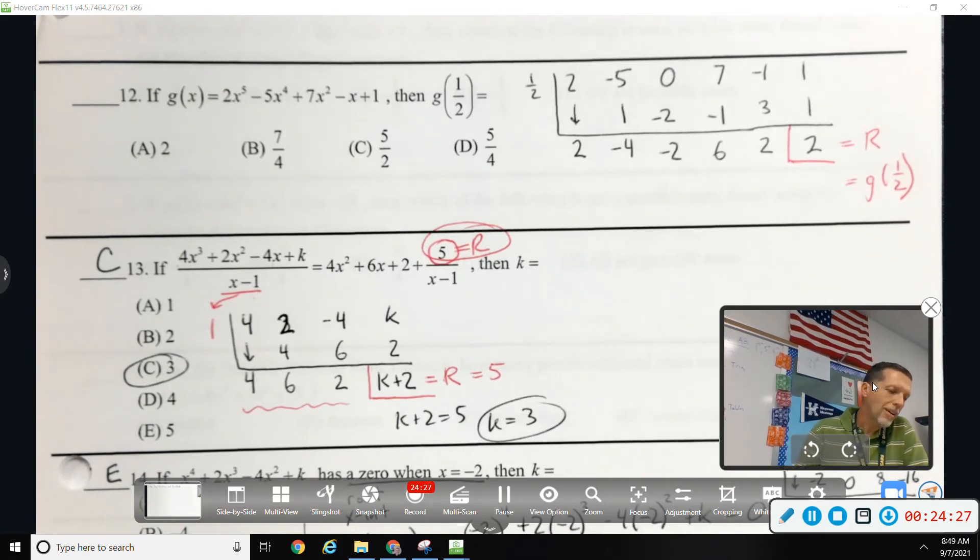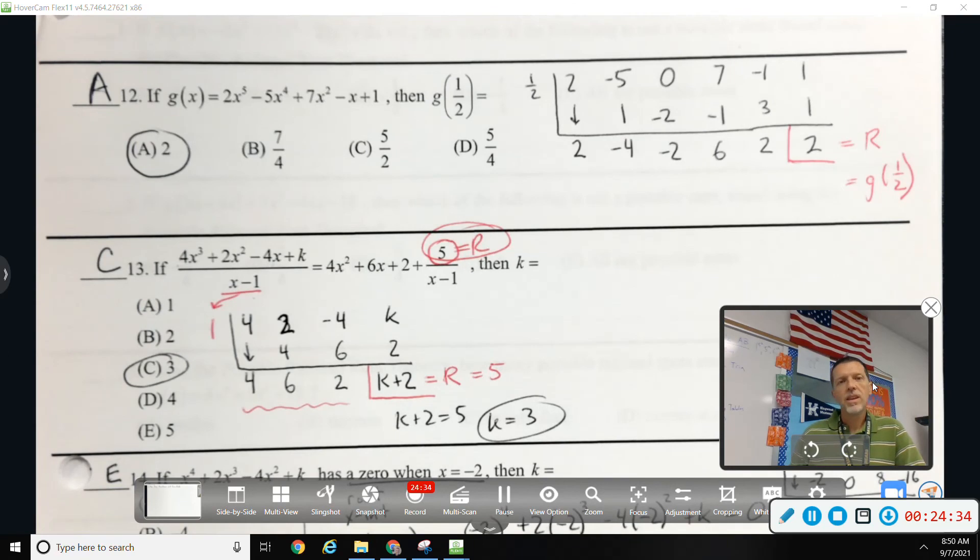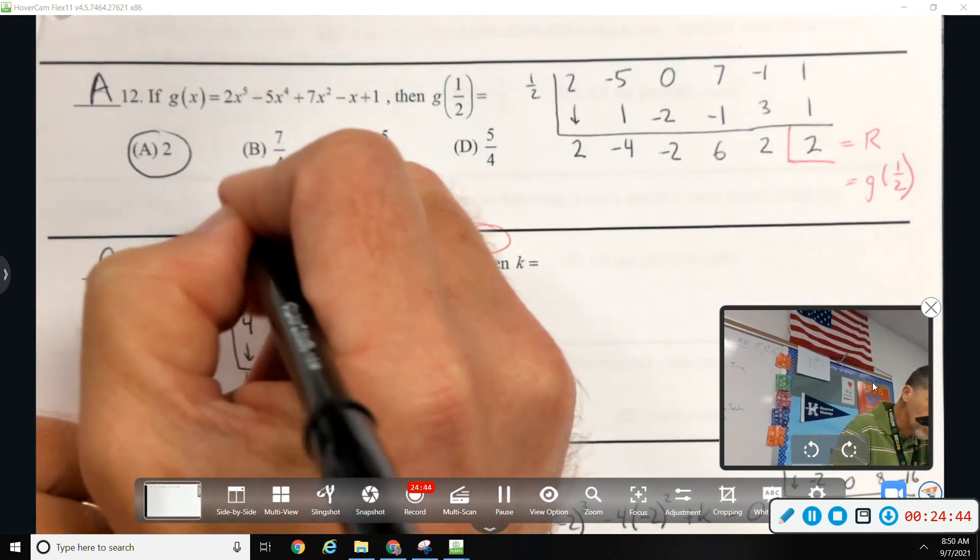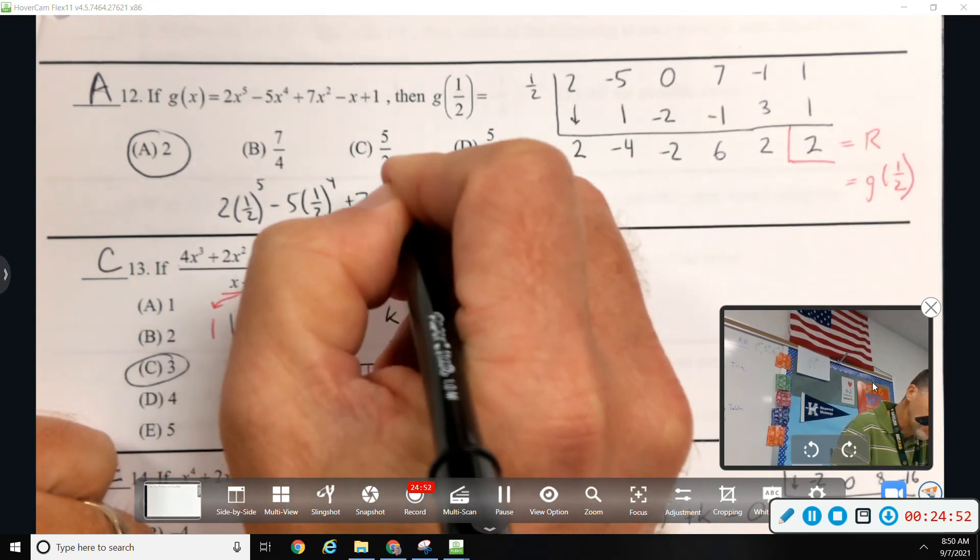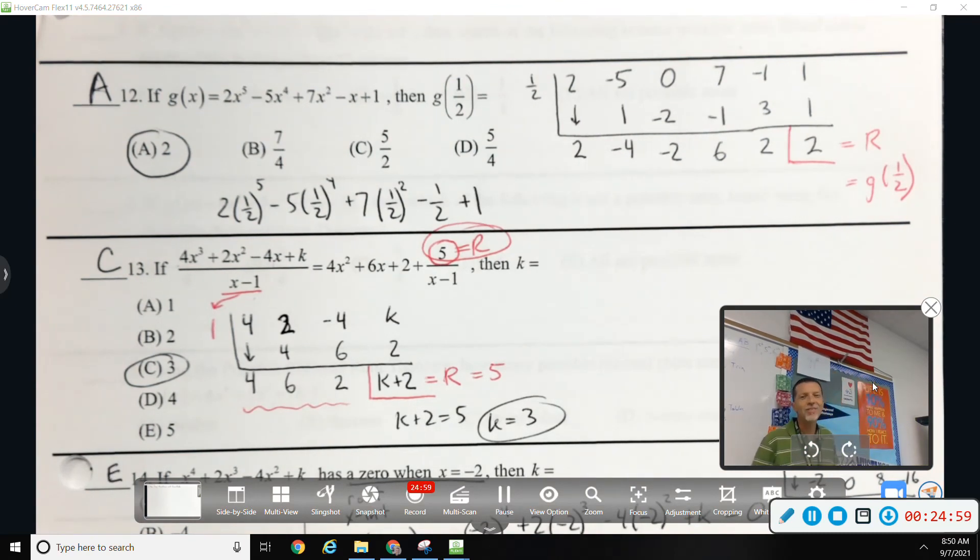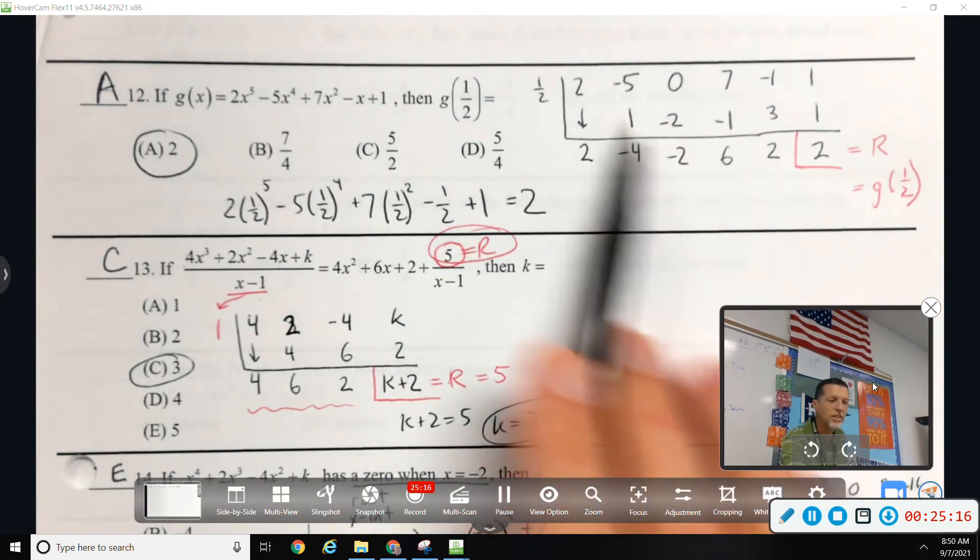So, my remainder is two, but that means if I had plugged in one half, I would get two. I'm not going to know which method, well, I guess I would know by looking at your work, but I'm not going to care, really, which method you use. So, if you wanted to do it this way, I mean, knock yourself out, but then you've got to, you've got to do one half to the fifth. It's been one half to the fourth and then get common denominators and, like I said, you should be confident enough to do that. It's just, why would you want to when there's an easier way? So, I'm going to say that equals two, not because I did the math, but because I did the synthetic division and got the remainder of two.